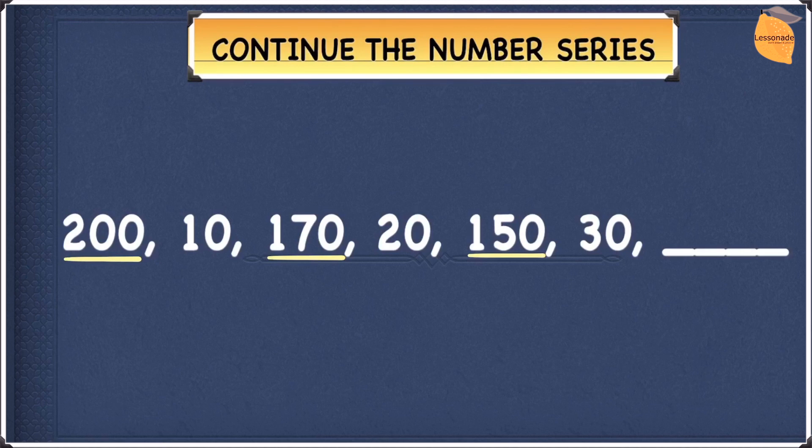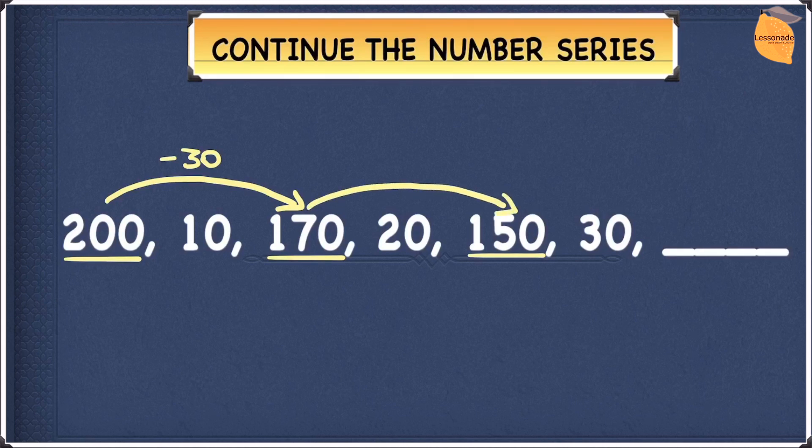Let's work out the first sequence first. To get from 200 to 170, we will have to take away 30. Now we're going to see what we have to do to 170 to get to 150. To do that, we will obviously have to take away 20.